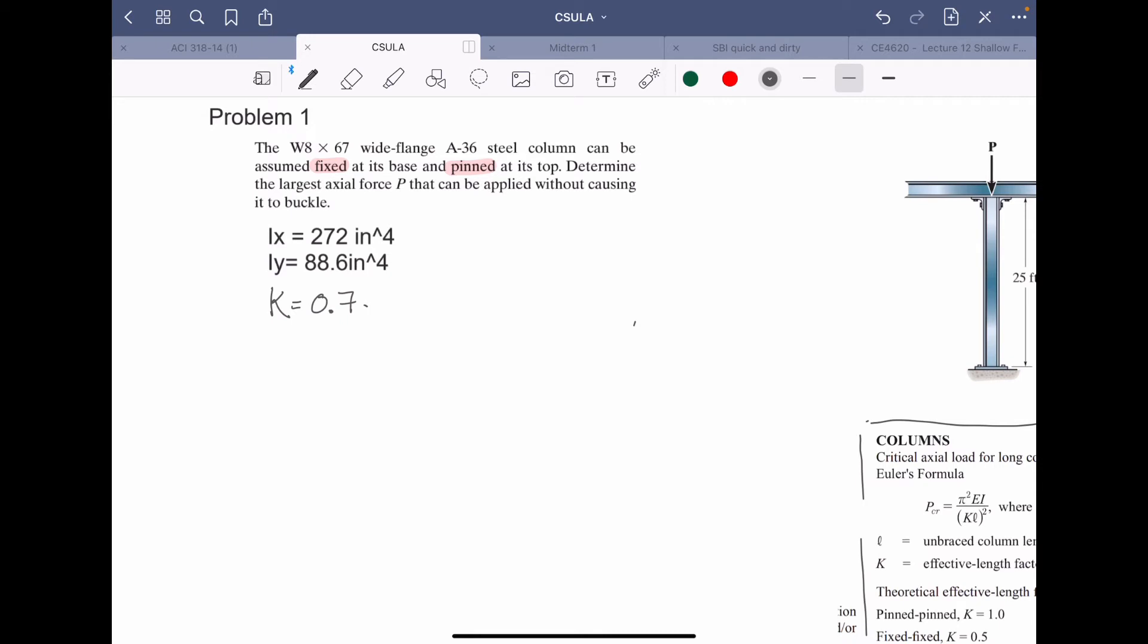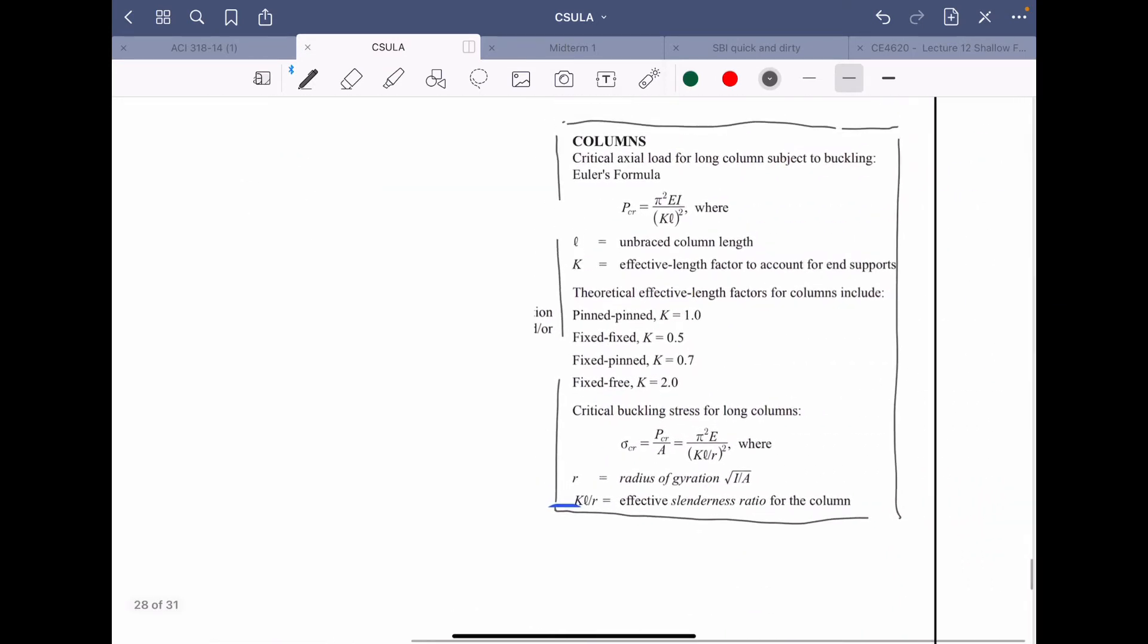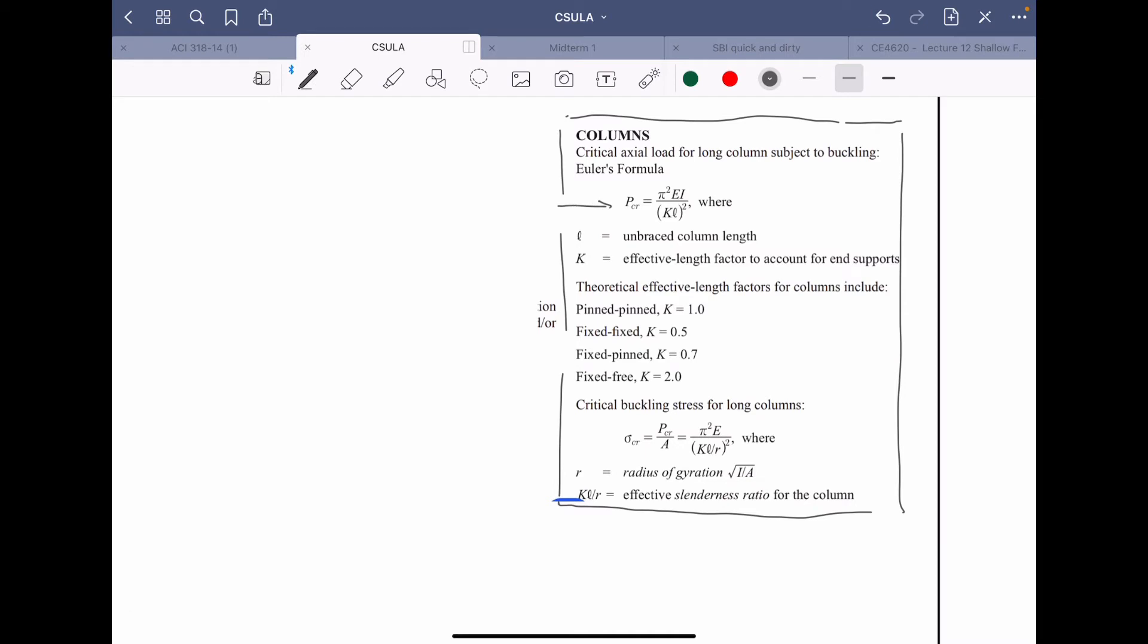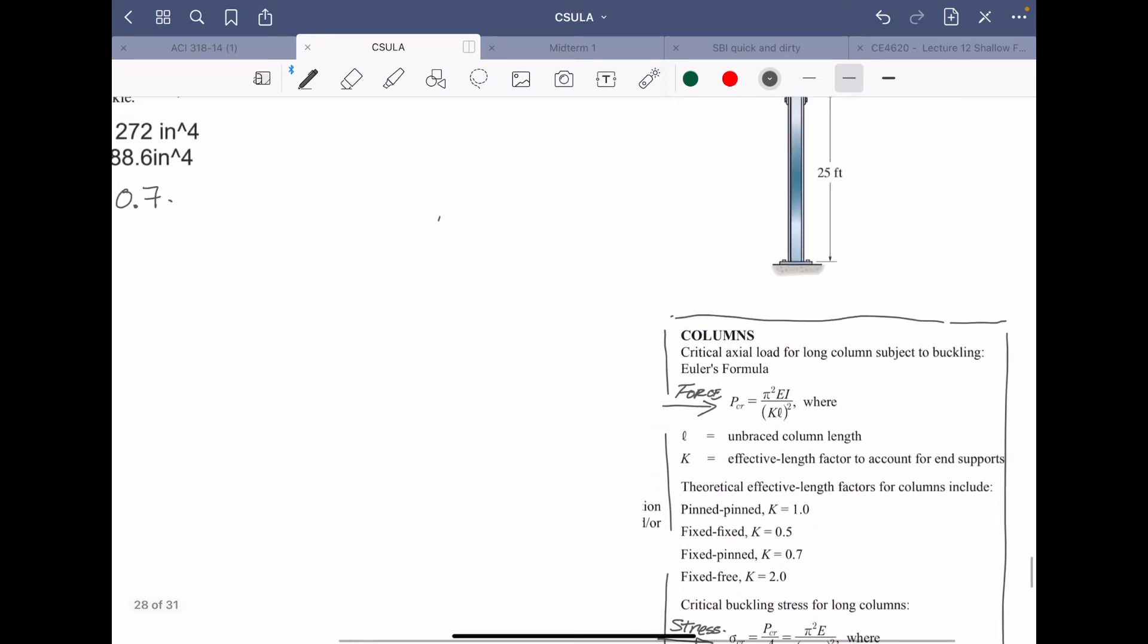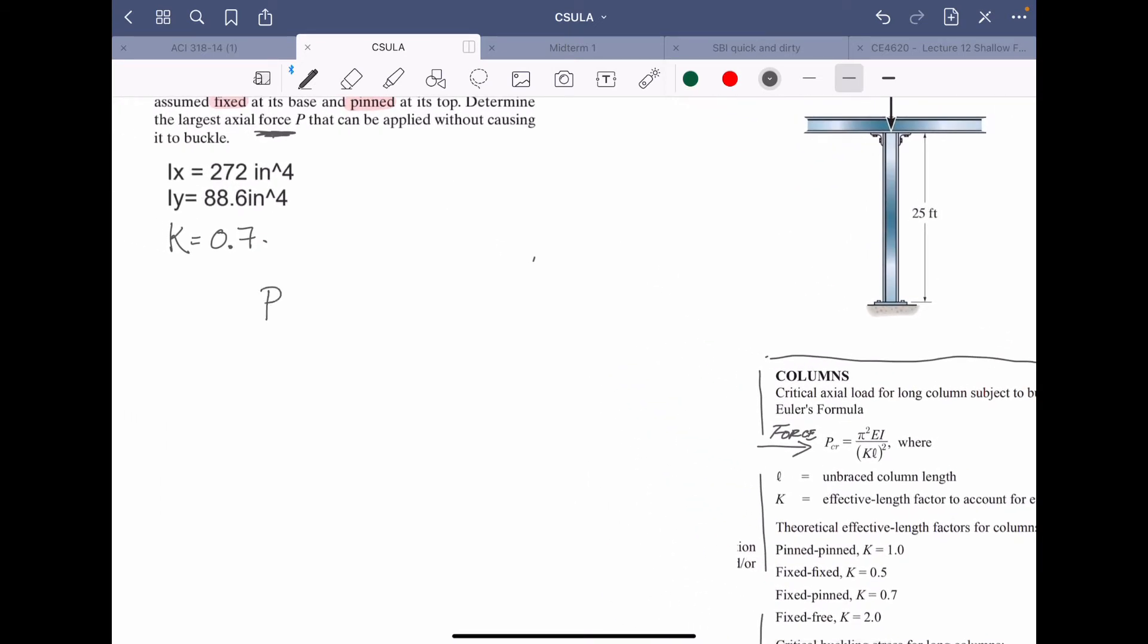Now I'm going to see if it's asking for stress or load. It says determine the force, not stress but force. So that tells me that this is a force, this is a stress. And that's really the only difference between the two formulas. So this one I'm just going to start writing out: P critical is equal to pi squared E I over K L squared.